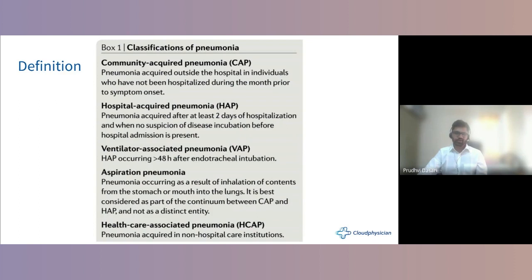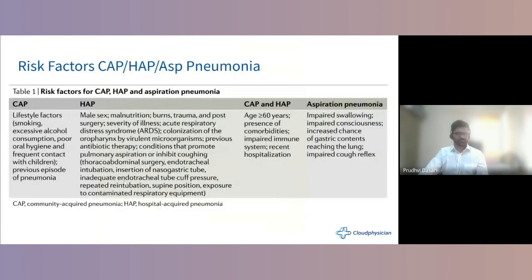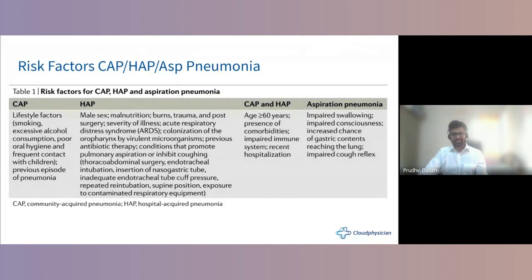HCAP is pneumonia acquired in non-hospital care institutions — like our second case scenario, where the patient was in a geriatric care facility. Risk factors for CAP include lifestyle factors and previous history of pneumonia. For HAP, factors include male sex, malnutrition, burns, trauma, post-surgery, severe illness, ARDS, and colonization.